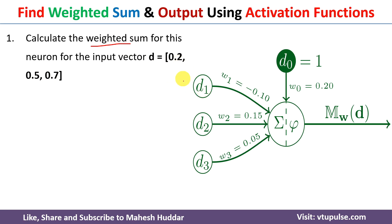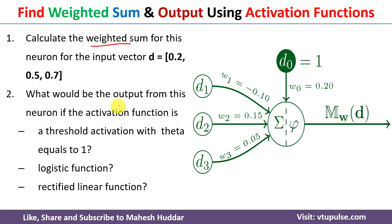That means D1 is equal to 0.2, D2 is equal to 0.5, and D3 is equal to 0.7. Once you calculate the weighted sum, the next step is to calculate the output using different activation functions. The first one is the threshold activation function with theta equals to 1. The second one is the logistic activation function. The third one is the rectified linear activation function, also known as ReLU.